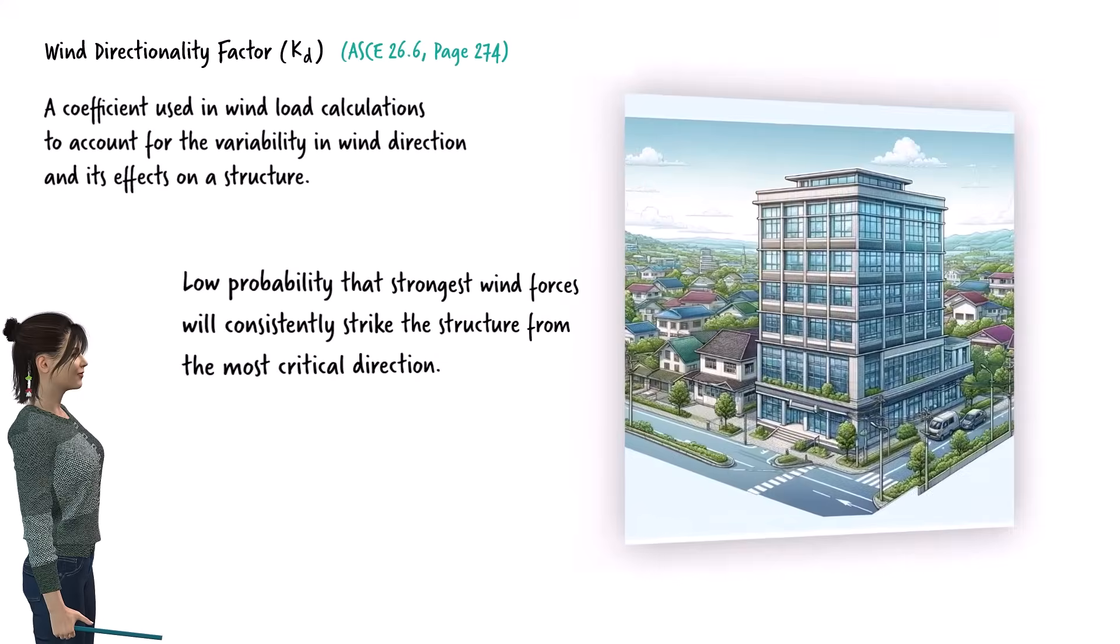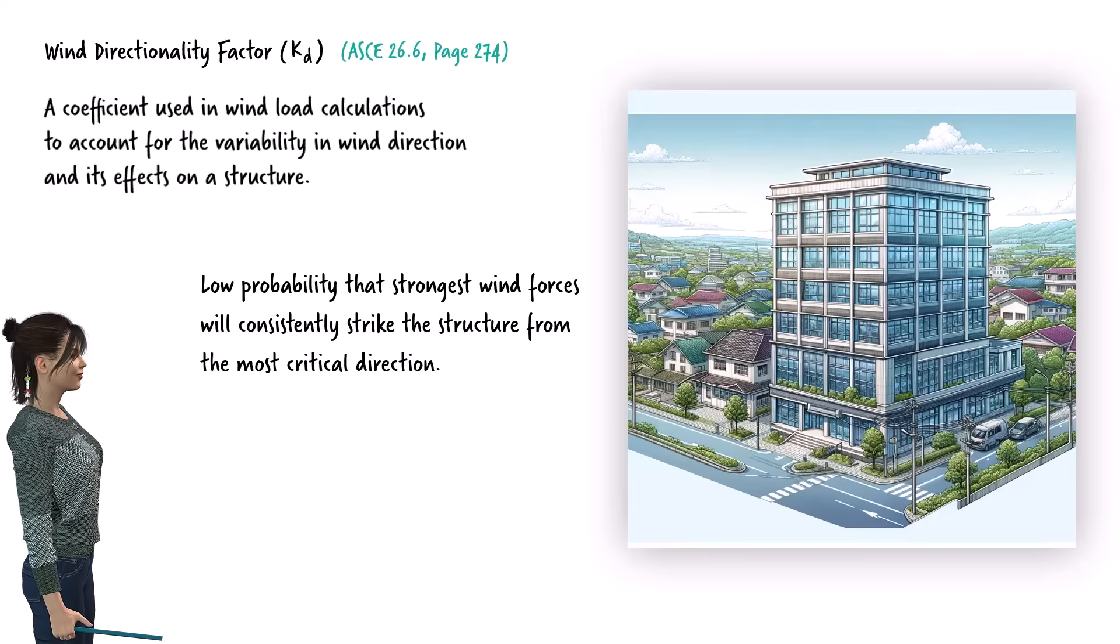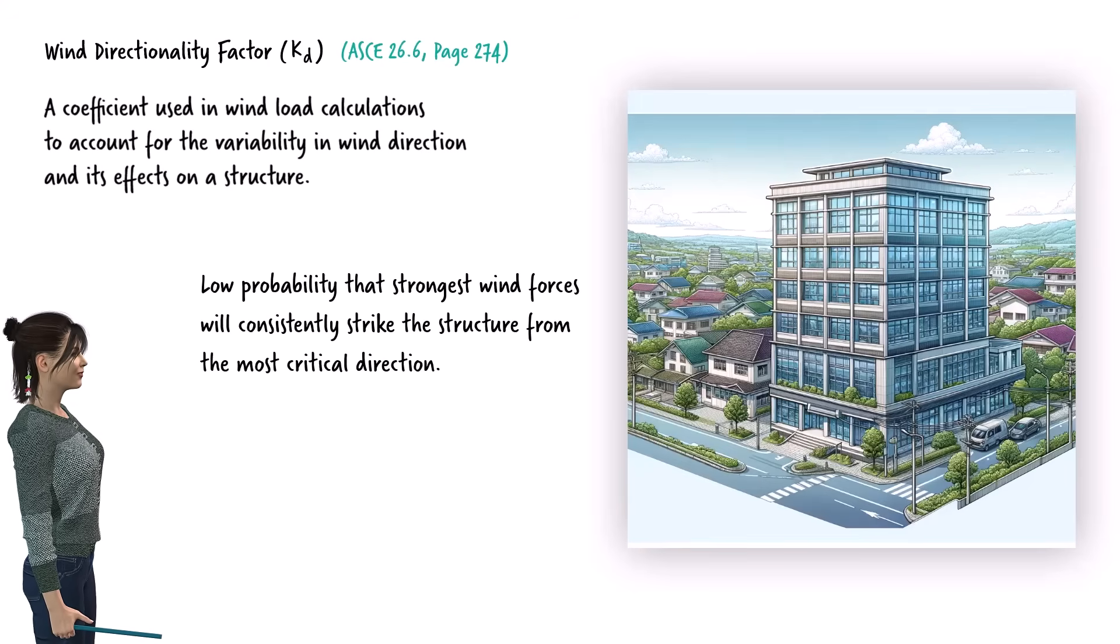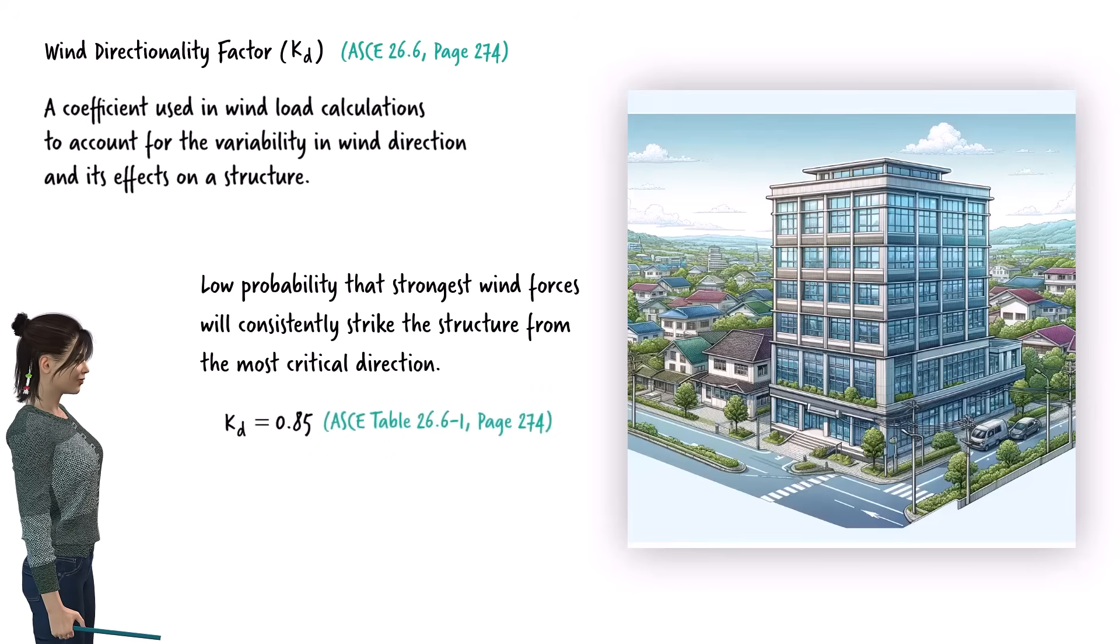In contrast, for a typical building, we use a reduced wind directionality factor to account for the lower probability that wind will consistently strike from the most critical direction. ASCE table 26.6-1 assigns a value of 0.85 for the wind directionality factor for buildings.